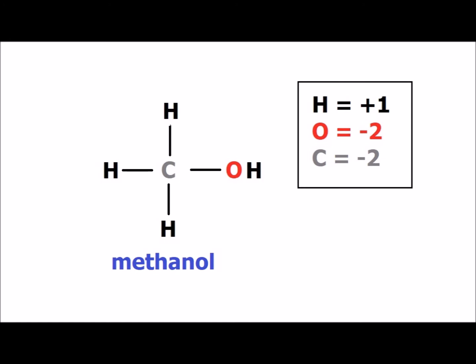The simplest alcohol, a primary alcohol, is methanol. Since oxygen typically in compounds has an oxidation number of minus 2, and each hydrogen has an oxidation number of plus 1, to get the whole compound to zero, carbon in methanol must have an oxidation number of minus 2.